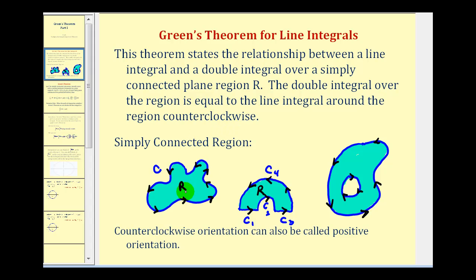Looking at this first region R, notice the curve around the region is oriented counterclockwise and it's smooth. Looking at the second region, it is piecewise smooth, meaning each of the four pieces of the curve are smooth, and therefore because the orientation is counterclockwise we could also apply Green's Theorem.